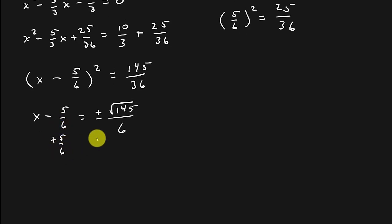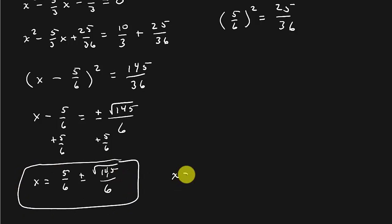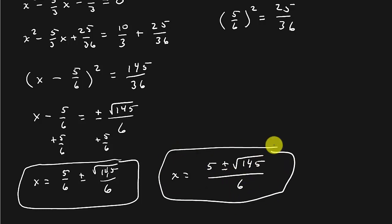We add the 5 over 6 to both sides. And so we get x equals 5 over 6, plus or minus the square root of 145 over 6. And there's your answer. Or, if you've got a teacher that's picky, and they want you to write it a certain way, you can put it all over the common denominator. If you're in my class, I don't care. I'm just happy if you get this.